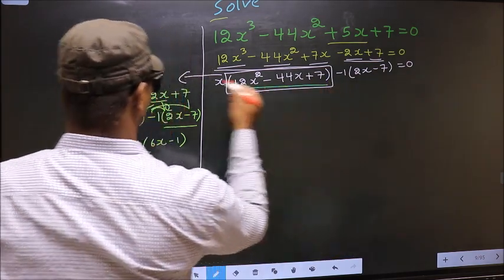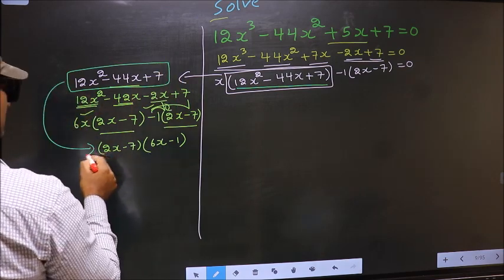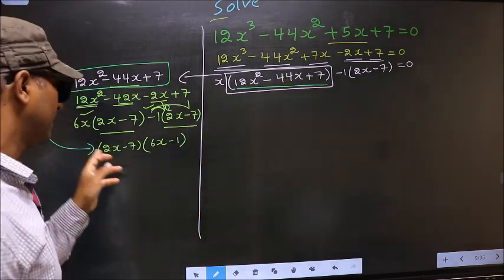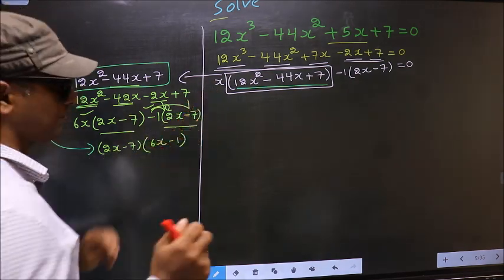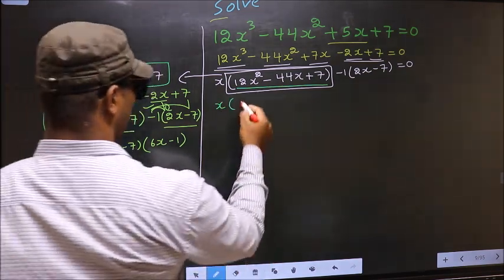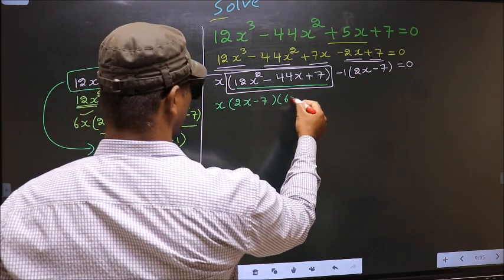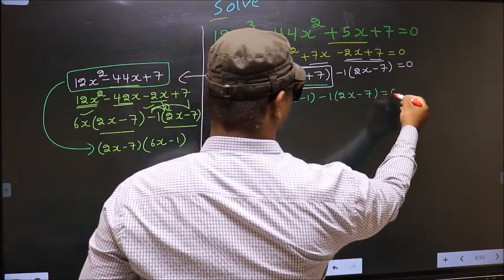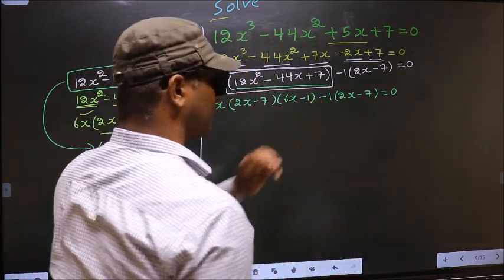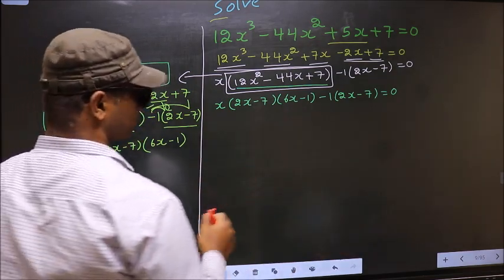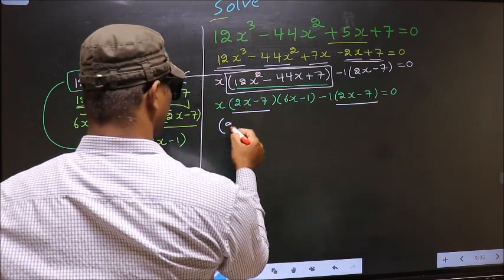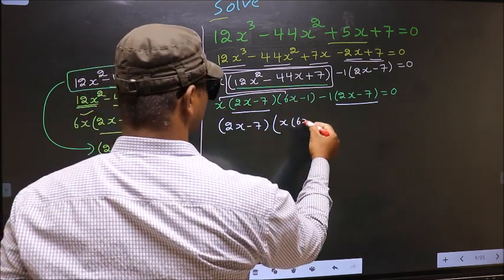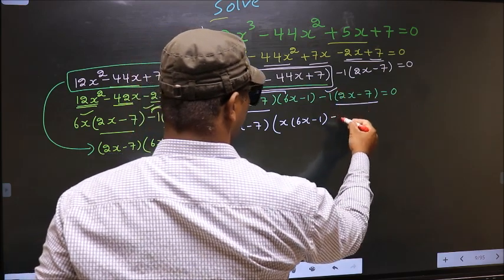In place of this quadratic we should write this factored form. So the equation changes to x times (2x minus 7)(6x minus 1) plus minus 1 equal to 0. From the entire equation, what can be taken out common is (2x minus 7). So (2x minus 7) outside, and we are left with x(6x minus 1) minus 1 equal to 0. Opening the brackets gives 6x² minus x minus 1 equal to 0.